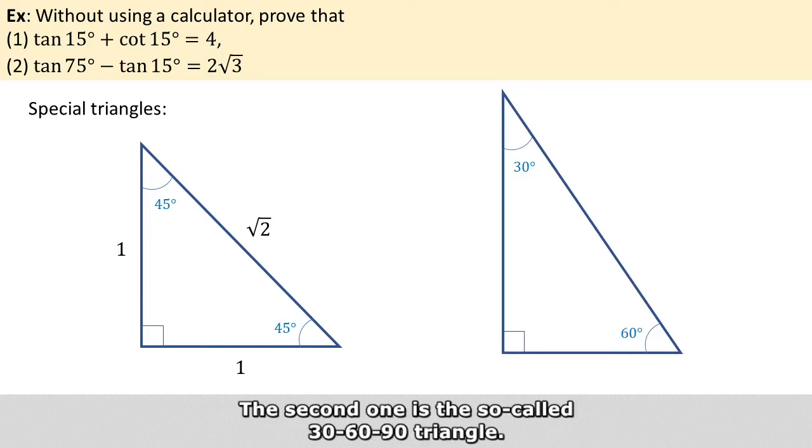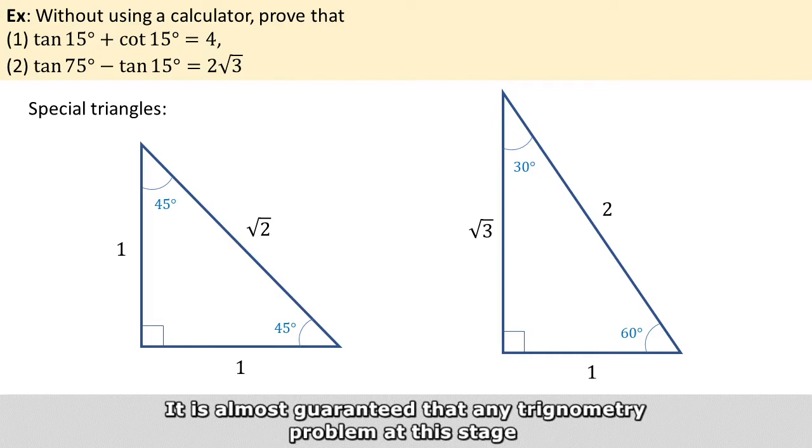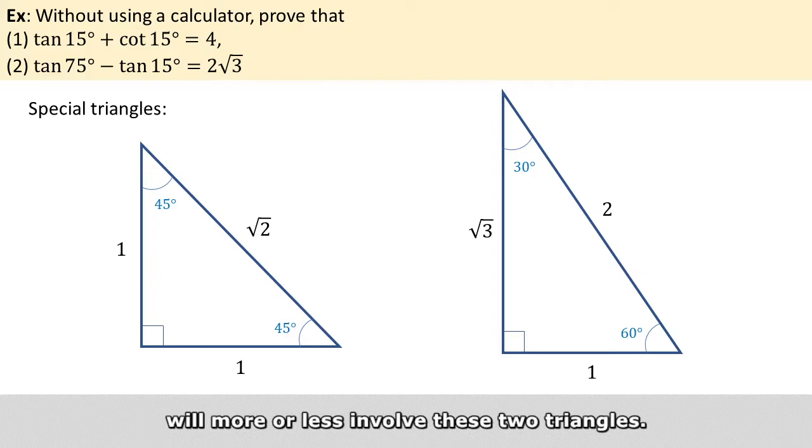The second one is the so-called 30-60-90 triangle. If the shortest side is 1, then the others will be square root of 3 and 2. It is almost guaranteed that any trigonometry problem at this stage would more or less involve these two triangles.